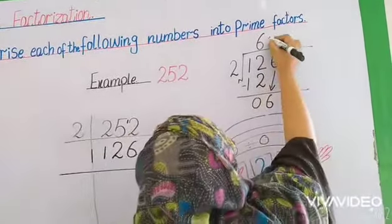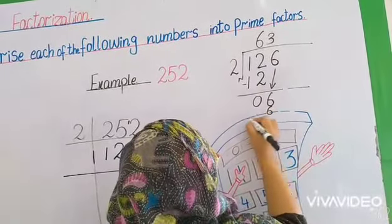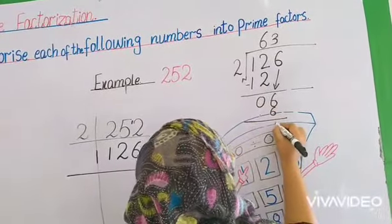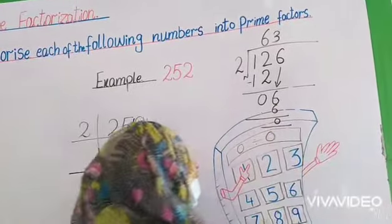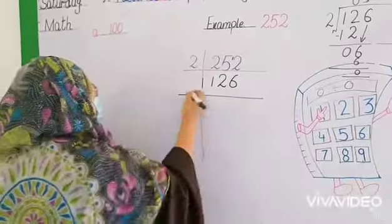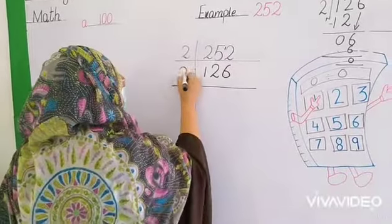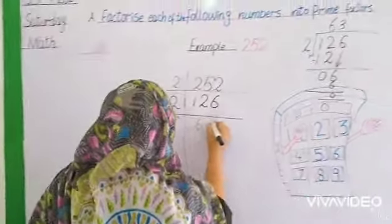2 threes are 6. We'll subtract this too. 6 minus 6 is 0. We'll write this: write 2 here, and write 63 here.